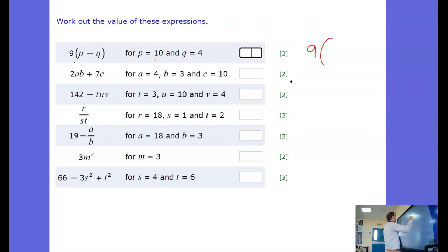So we've got 9, p is 10, minus q, q is 4. Same thing BODMAS we do the brackets first so this is 9 times 6 which is I think 54.